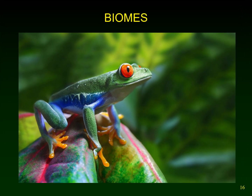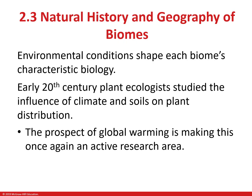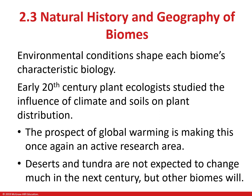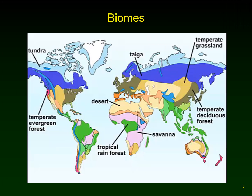Now we're ready to go into the biome section, which is Section 2.3 of the textbook, called 'Natural History and Geography of Biomes.' Environmental conditions shape what each biome has living there. We're going to discuss the specifics of climate, soils, and organisms in each major biome, and how those have been influenced by people. We talked last time about how in the early 1900s there was a lot of research on biome structure — it was considered important to understand how things work together to create a functional, sustainable system.